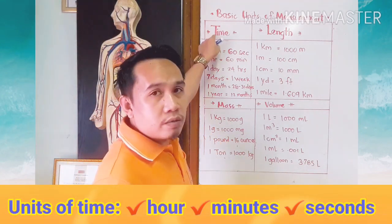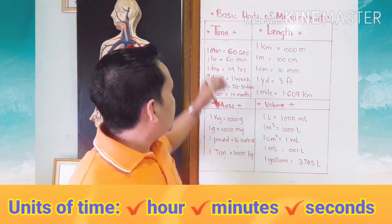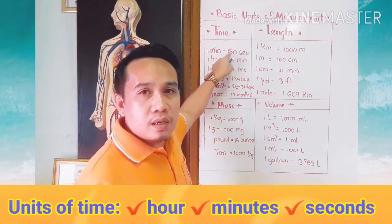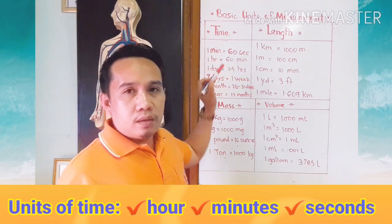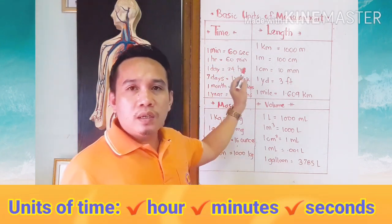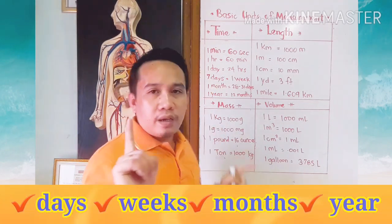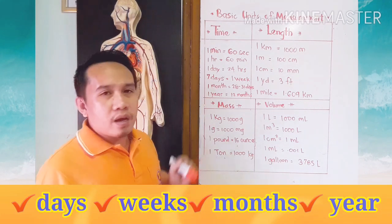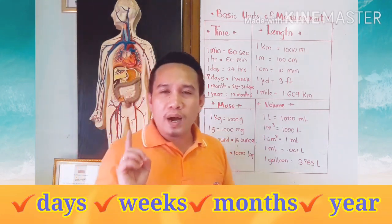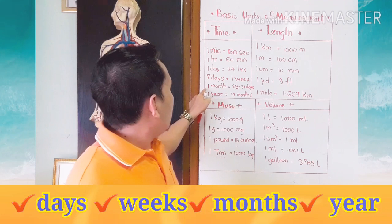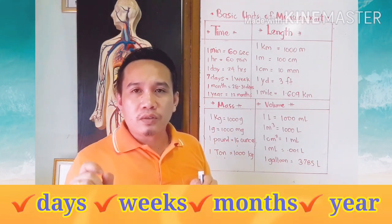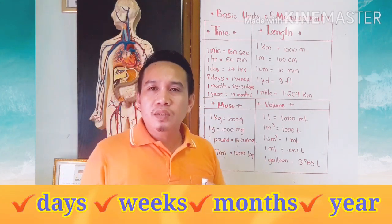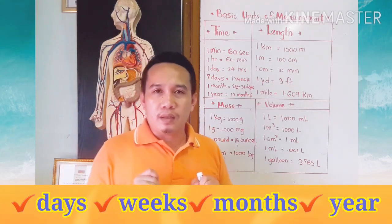When measuring time: 1 minute is equal to 60 seconds; 1 hour is equal to 60 minutes; 1 day is equal to 24 hours; 7 days is equal to 1 week; 1 month is equal to 28 to 31 days; and 1 year is equal to 12 months.